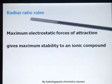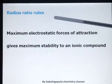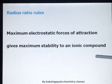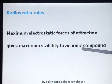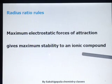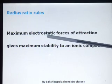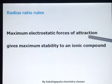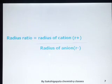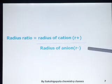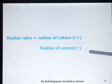What do we mean by radius ratio and what is its importance? When talking about any ionic solid, ionic solid gains stability. The factor which provides stability to ionic compounds is the maximum electrostatic force of attraction. The radius ratio means the radius of the cation, denoted by R plus, divided by the radius of the anion, denoted by R minus.